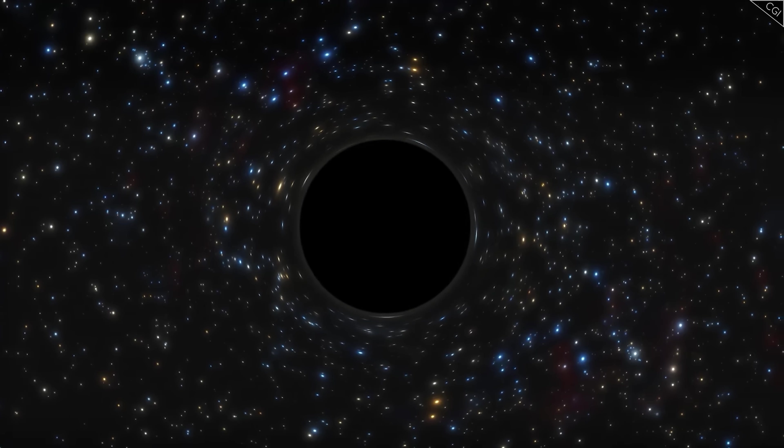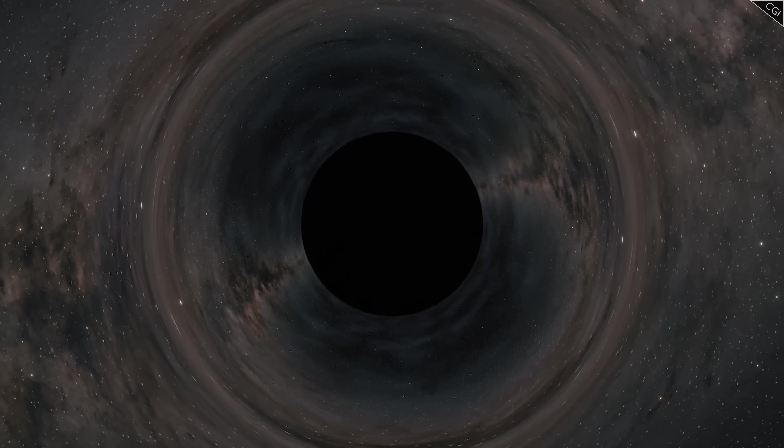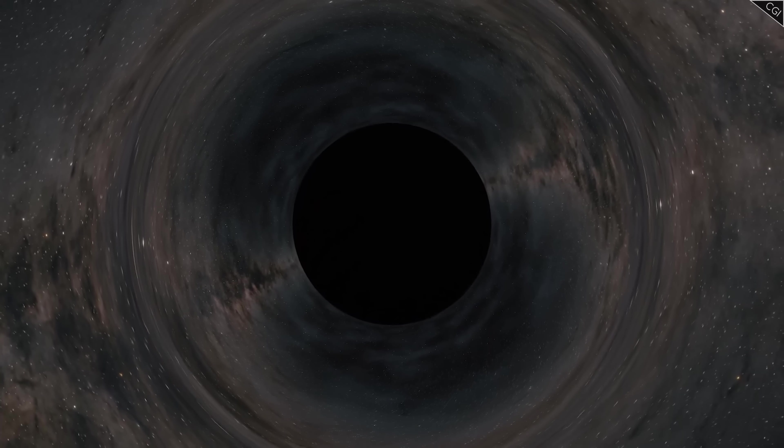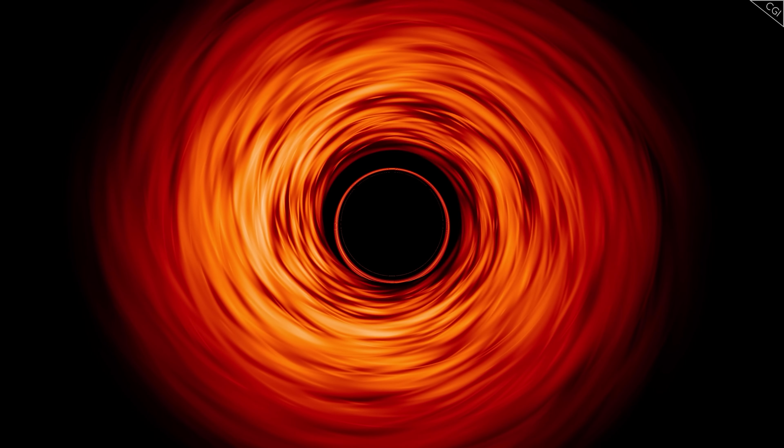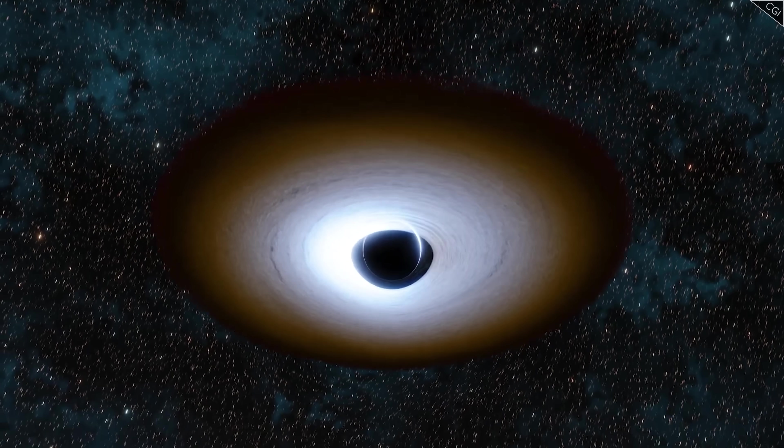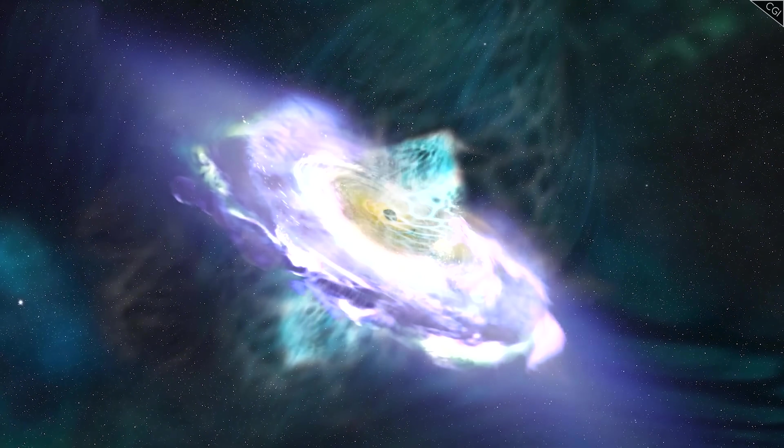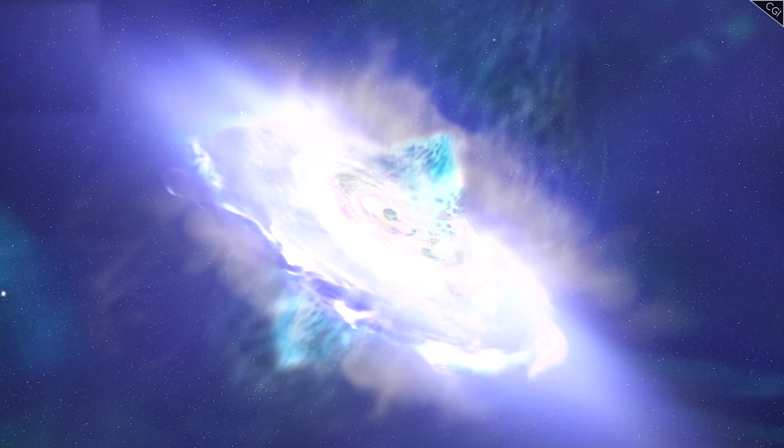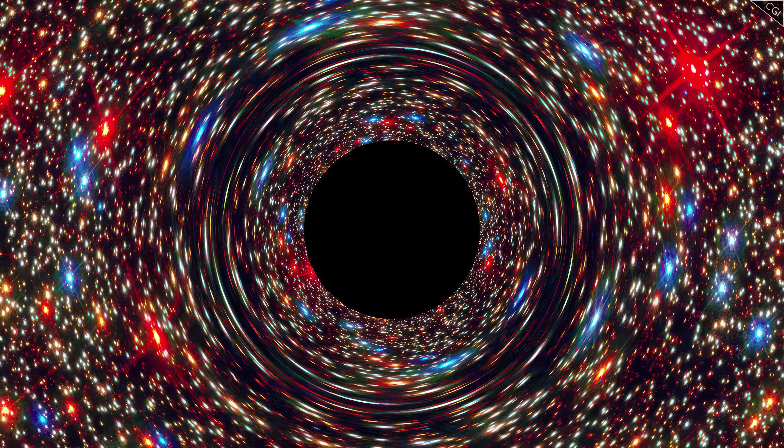For black holes, you might think this would be less of a problem. Isn't the whole point of black holes that they don't radiate any light? But their accretion disks are a different story. As we discussed earlier, accretion disks around supermassive black holes can be incredibly bright, particularly around supermassive black holes, sometimes dwarfing the brightness of the stars in the galaxy they reside in.